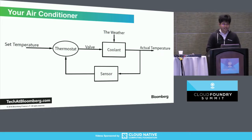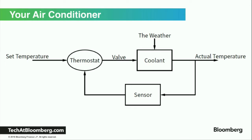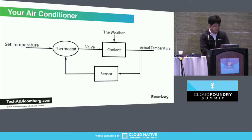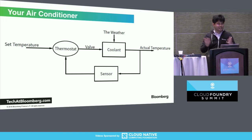Now let's move to the air conditioner. The architecture looks similar. An air conditioner releases coolant to the environment. When the weather becomes hotter — like the sun rises — the temperature in the room increases. The sensor in your air conditioner registers that temperature, and then the thermostat compares the actual temperature with the temperature you set. Since it's too high, it configures the coolant valve to release more coolant, thereby lowering the temperature. The difference is that the air conditioner doesn't have a temperature reliability engineer that gets woken up at 2 a.m. — it's all automated in the thermostat.